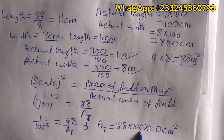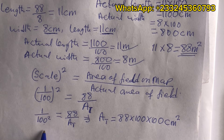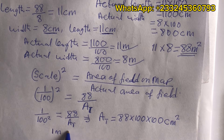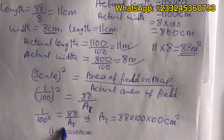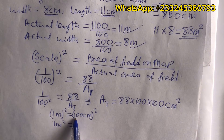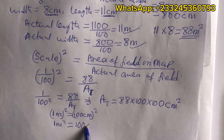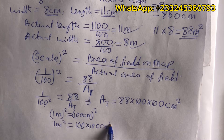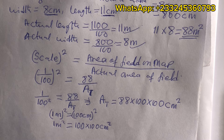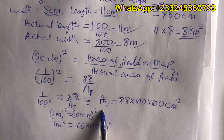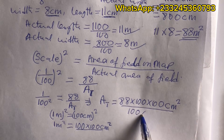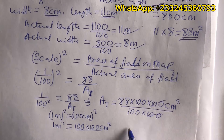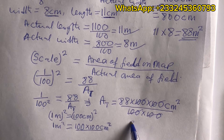Since 1 metre = 100 cm, squaring both sides gives 1 m² = 100 × 100 cm². To convert the actual area to metres squared, we divide 88 × 100 × 100 by 100 × 100 — the 100s cancel and we get 88 metres squared. We avoid multiplying out large numbers since you are at JHS level and not using calculators.